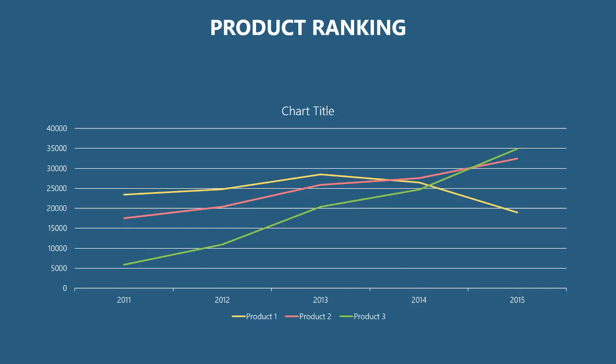We can do the same thing with our product rankings as well. Any data you have in any of the common data formats — such as Excel, CSV files, RSS feeds, XML feeds — can easily be pulled into PowerPoint using this system. So you can use PowerPoint to create KPI dashboards that include all of this information.